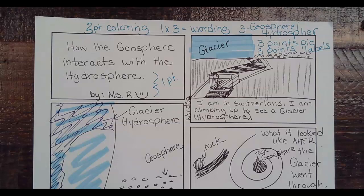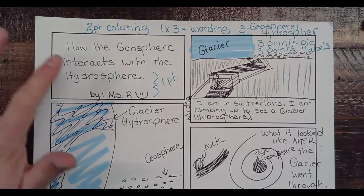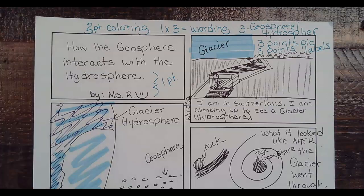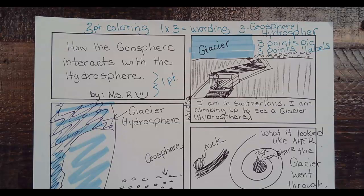Welcome back to science. We started talking about this the other day — who can summarize what the geosphere is? So the geosphere is basically the ground you're standing on. Any ground anywhere is the geosphere, so an island in the middle of the Pacific Ocean is the geosphere.